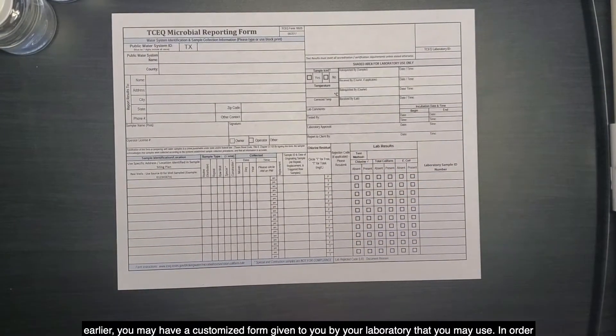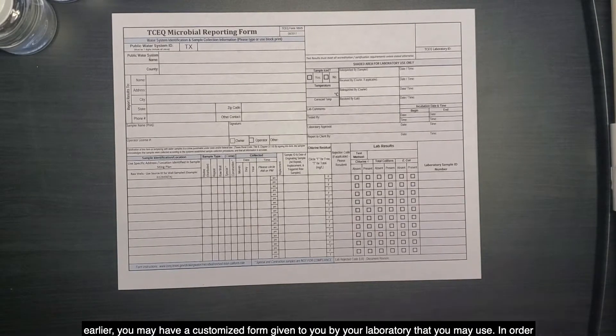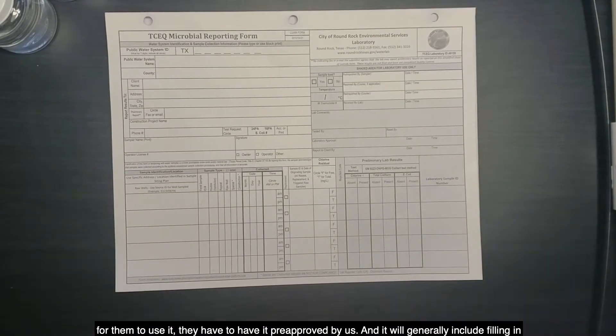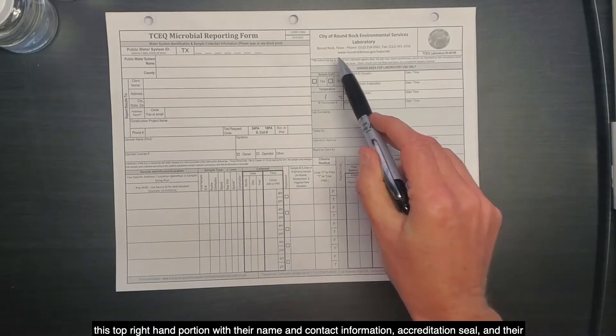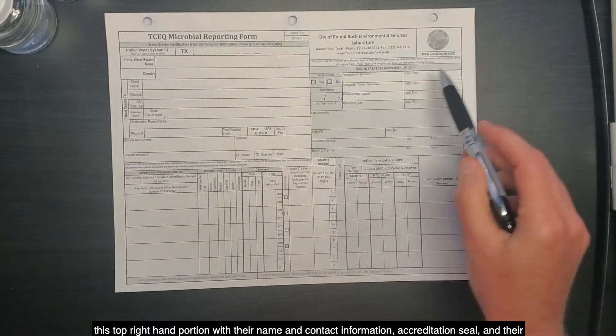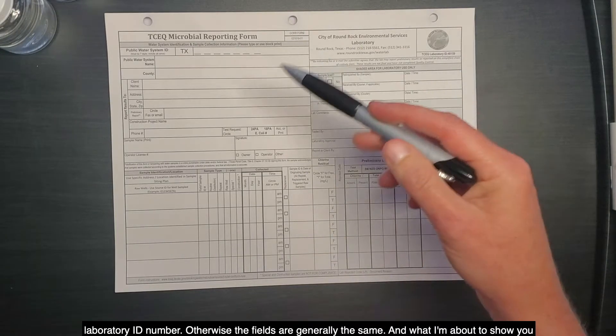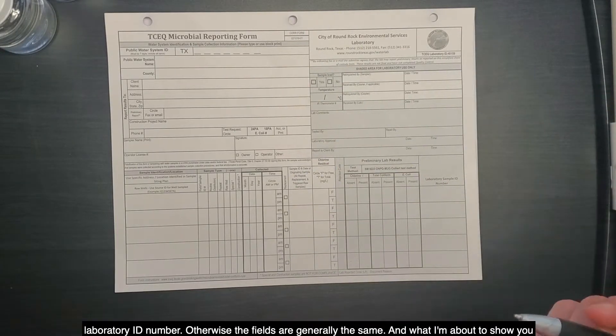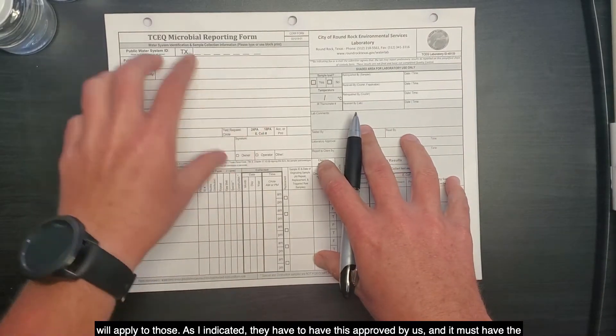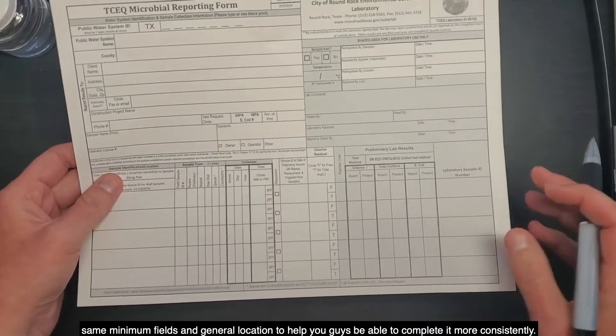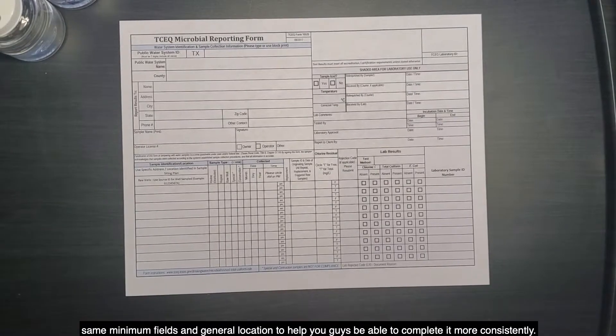As I indicated earlier, you may have a customized form given to you by your laboratory that you may use. In order for them to use that, they have to have it pre-approved by us, and it will generally include filling in this top right-hand portion with their name and contact information, accreditation seal, and their laboratory ID number. Otherwise, the fields are generally the same, and what I'm about to show you will apply to those. As I indicated, they have to have this approved by us, and it must have the same minimum fields and general location to help you guys be able to complete it more consistently.